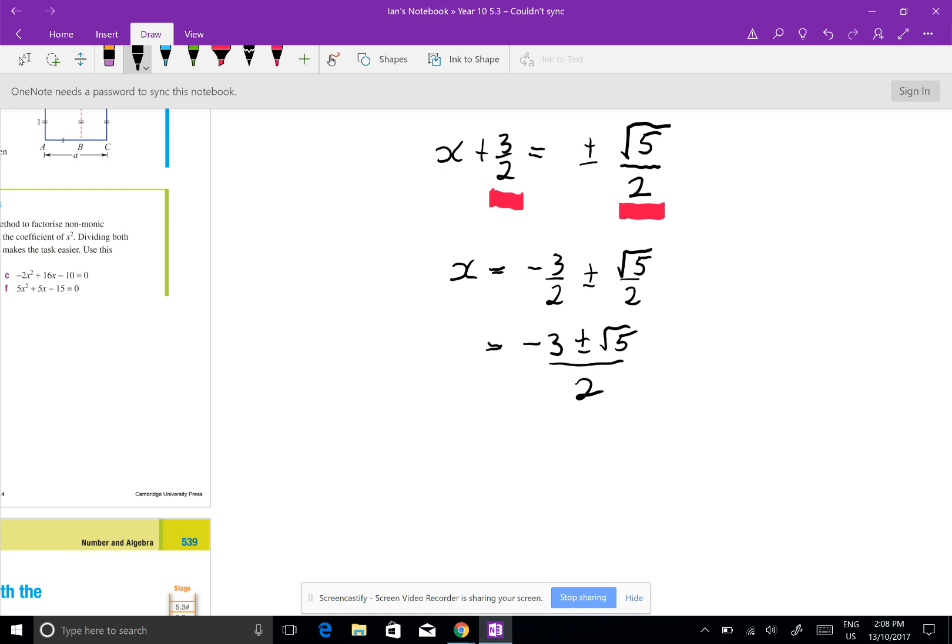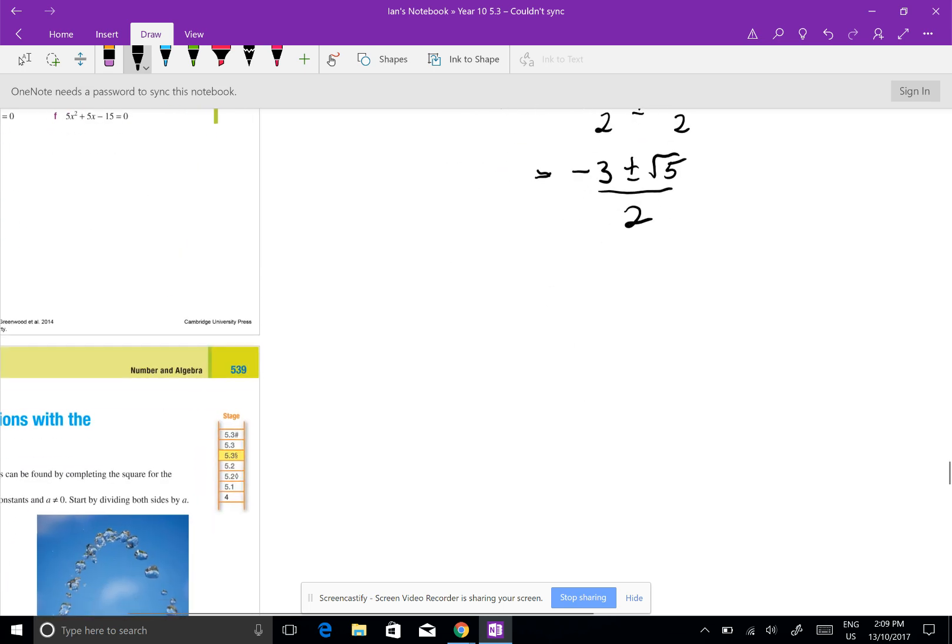And if I look at 7b, there it is: minus 3 plus root 5 over 2, minus 3 minus root 5 over 2. I want to do one more.